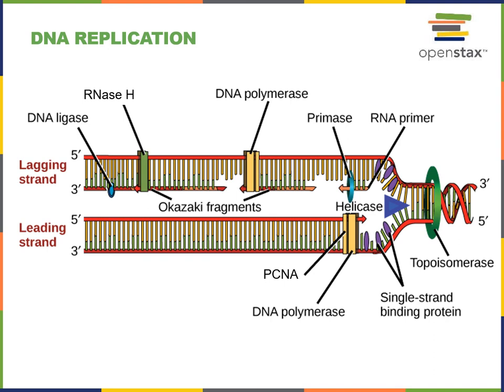The illustration here shows a replication fork at one end of a replication bubble. At the end of DNA replication, all of the replication bubbles will have joined together and the chromosome will have been completely replicated. The first step of DNA replication is known as initiation. An enzyme known as helicase breaks the hydrogen bonds that hold together complementary base pairs. Following helicase, the enzyme primase constructs an RNA primer complementary to the DNA template.